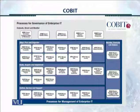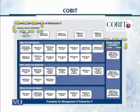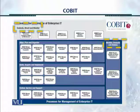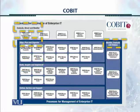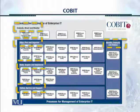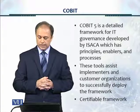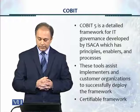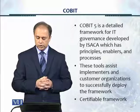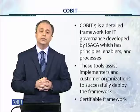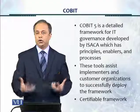This graphic shows evaluate, direct, and monitor on one axis, and monitor, evaluate, and assess on another. These are different processes which COBIT 5 has developed in a structured manner for implementers and organizations. COBIT 5 is a detailed framework for IT governance developed by ISACA, with principles, enablers, and processes. It is a certifiable framework, and organizations can get certified against COBIT 5 as well.